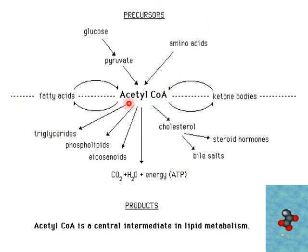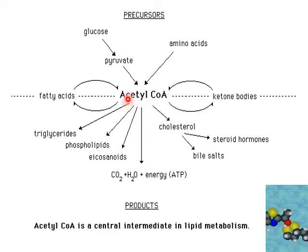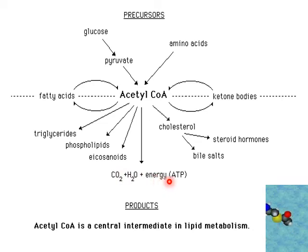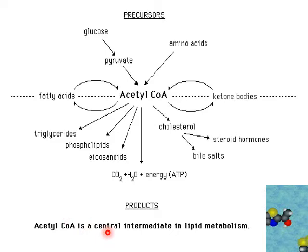Acetyl CoA can be converted back to fatty acids, result in the production of triglycerides (TAGs), act as a precursor for phospholipids, synthesize eicosanoids or prostaglandins, undergo the Krebs cycle producing energy, be linked to cholesterol and further converted into bile salts and steroid hormones, or act as a precursor for ketone bodies. Therefore, acetyl CoA is considered the key or central intermediate in the metabolism of lipids.